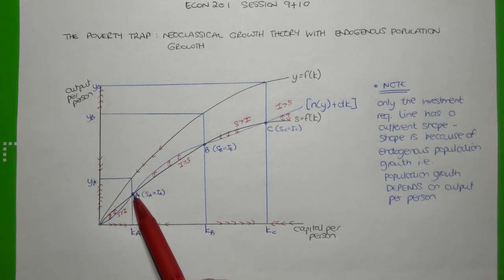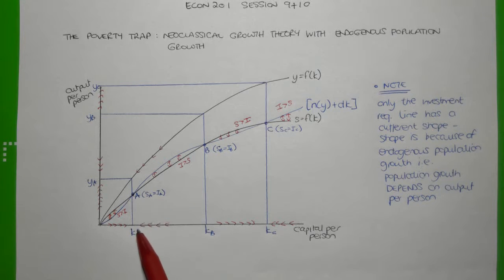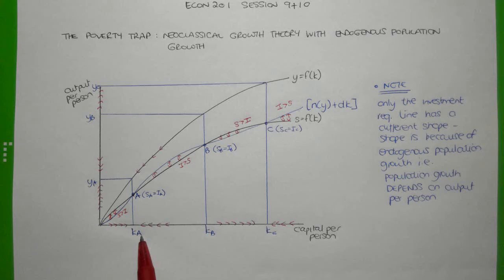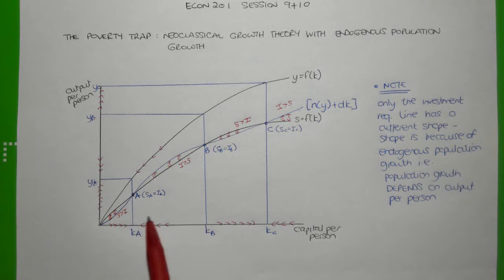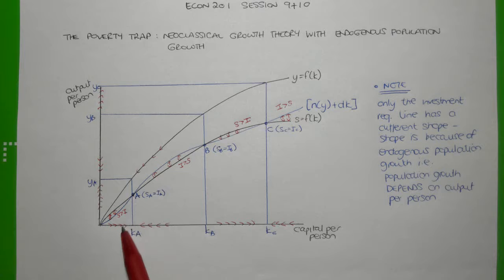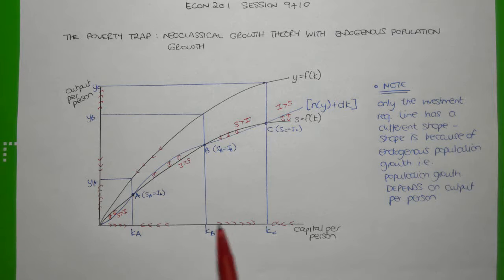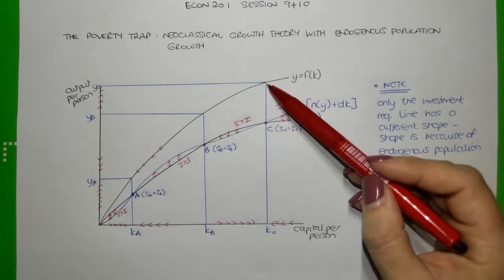Equilibrium A is called a poverty trap because it is very difficult for an economy to attract enough investment to expand the capital-to-labor ratio to the level needed to achieve higher output per person. Everywhere between KA and KB, those levels of capital per person are unsustainable and the economy moves back to point A. It's only if the economy can increase capital stock per person beyond KB — perhaps by implementing what we call a big push — that it would eventually achieve the higher steady state equilibrium at point C, where output per person would be much higher.